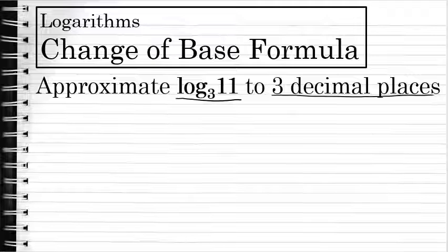Based on the definition of a logarithm, log base 3 of 11 means 3 to what power equals 11? When you're evaluating a logarithm, you're finding an exponent. 3 to what power is 11 in this case? Well, I know 3 to the first is 3. 3 to the second would be 9. And 3 to the third is 27. So the value of this logarithm will be between 2 and 3. If I would have to guess, I would say maybe 2.1.